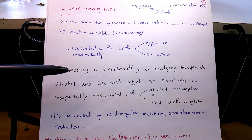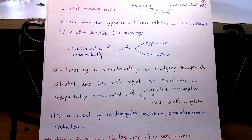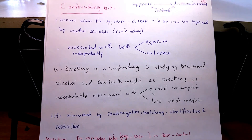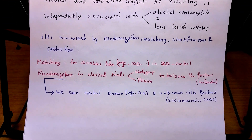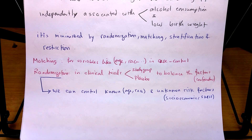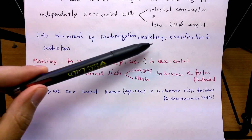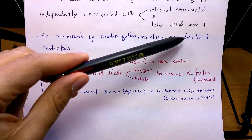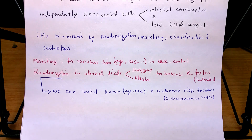So how do we eliminate or minimize the confounder? There are certain ways we do this in studies. One of them is randomization, matching, and stratification or stratified analysis.